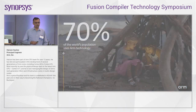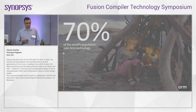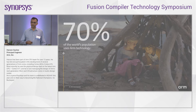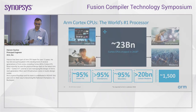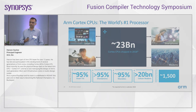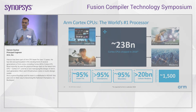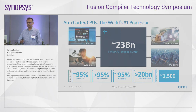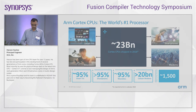We are a global CPU company, and the majority of the population has used or is using ARM technology in one way or another. We shipped 23 billion Cortex processors in 2018 — we hit that milestone. Our Cortex-A cores have a big market share in a lot of different areas, and as I speak, we are going into newer and newer market areas also.